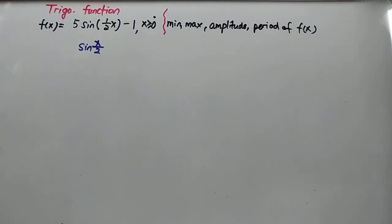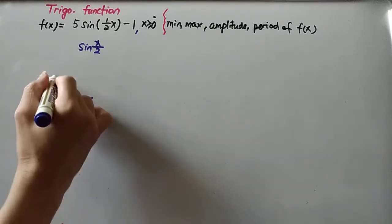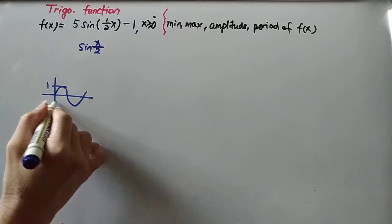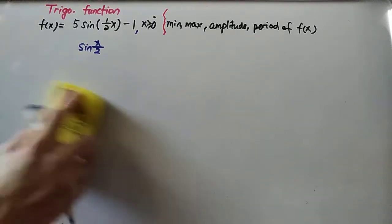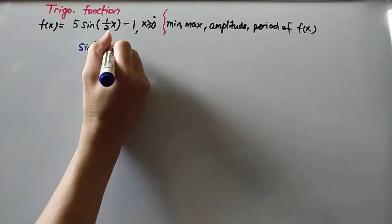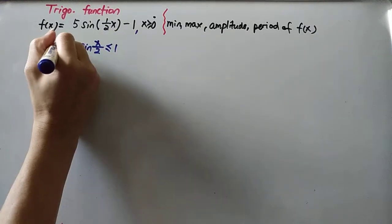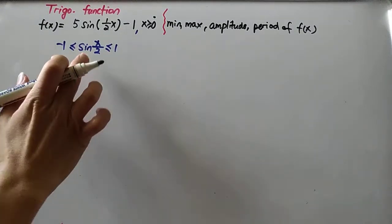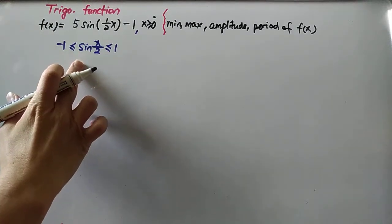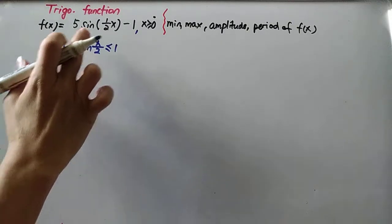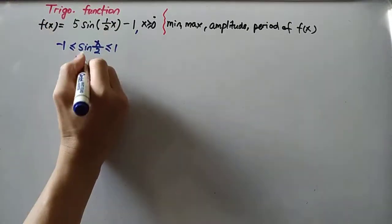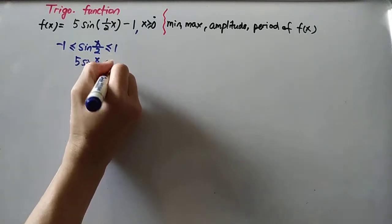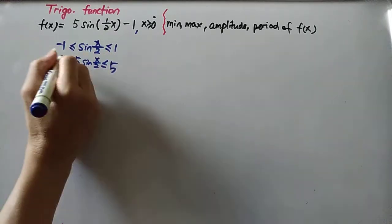For sine function, the maximum value is one and the minimum is negative one. So for any given sine function, in this case our function is sin(x/2), we multiply by 5 because we have 5 here, so this will be 5 and this will be negative 5.